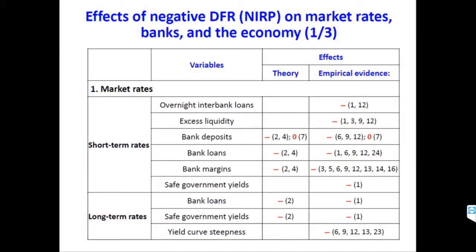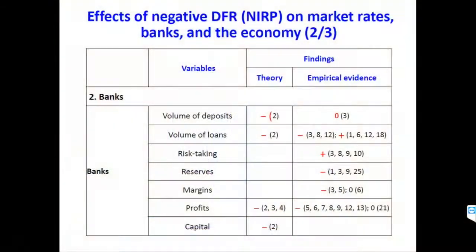What did we find? Regarding the effects of negative deposit facility rate, or NIRP, on market rates: basically all papers — both the few theoretical papers and most empirical ones — show that NIRP has brought down interest rates, both short-term and long-term, has flattened yield curves, and has reduced safe government bond yields in the short, medium, and longer term. Pass-through other than to household deposits has been largely full in this literature.